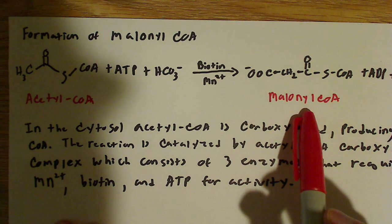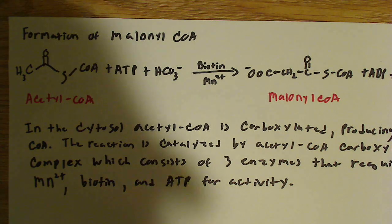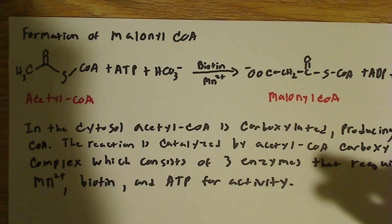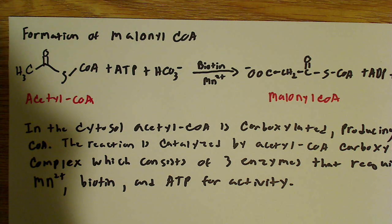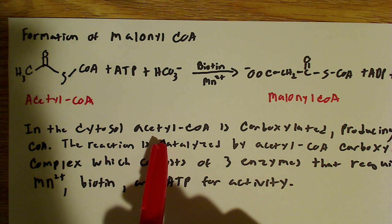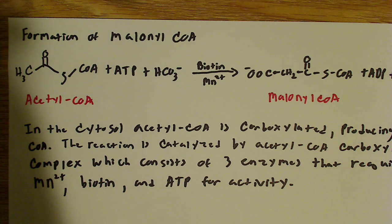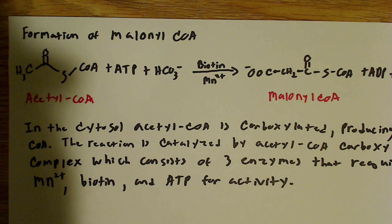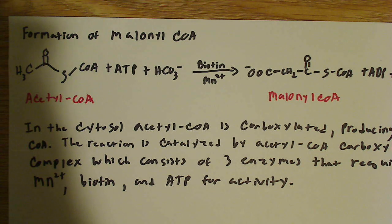Of course, there's a much more detailed process than that. This reaction is occurring in the cytosol, and that's different from where beta-oxidation occurs. Beta-oxidation occurs in the mitochondrial matrix, so right off the bat we can see that there's a separation of these two pathways — they're not occurring in the same location in the cell.